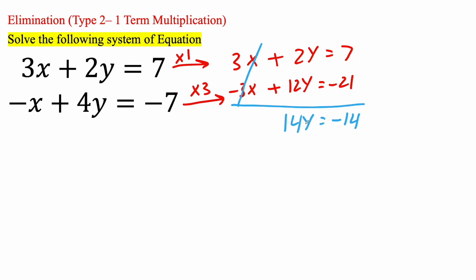2y plus 12y is going to give us 14y is equal to negative 21 plus 7 is negative 14. So it's saying 14 times y is equal to negative 14. If you want to get rid of this 14, you need to divide by 14, divide by 14. And so we're going to get y is equal to negative 1.